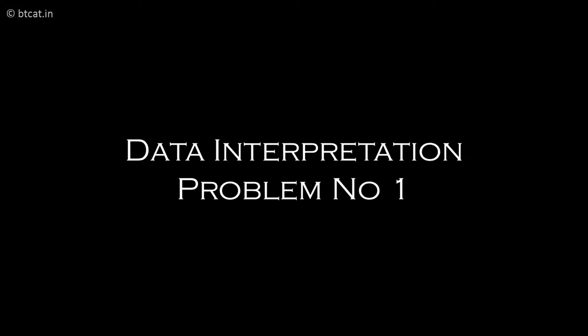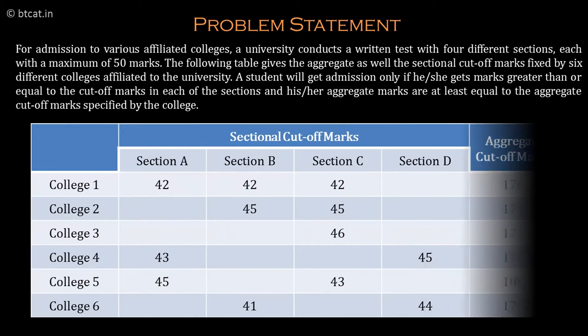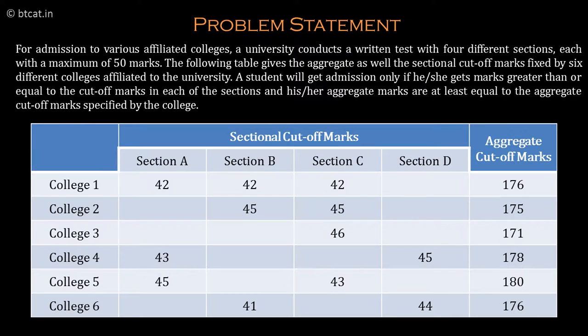Let us take this data interpretation question, which is a CAT 2008 question. There are six colleges and we want to get calls from these colleges. There are four sections and each section has a sectional cutoff, which is given in a table showing which college has what sectional cutoff pertaining to that particular section.